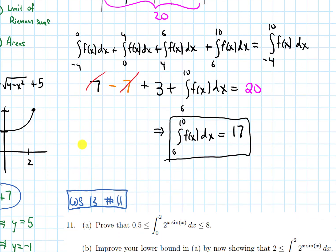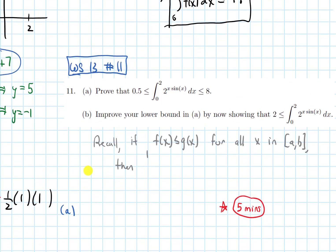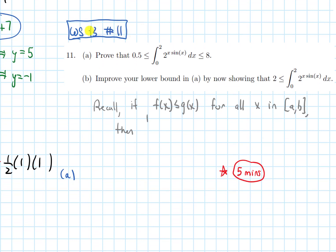Let's do another practice problem involving a different integral property. Problem 11 from Worksheet 13: Part A asks us to prove that the integral from 0 to 2 of 2 to the power of (x sine x) dx is less than or equal to 8 and greater than or equal to 0.5. Part B is similar — it asks us to improve the lower bound and show that the integral is actually greater than or equal to 2.